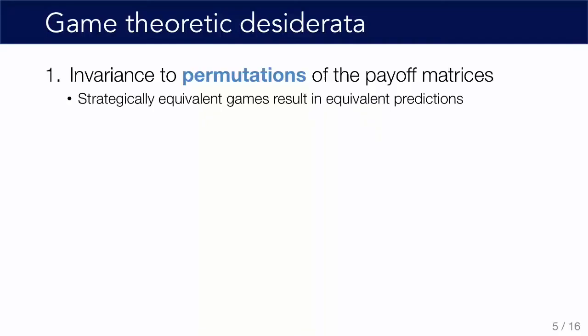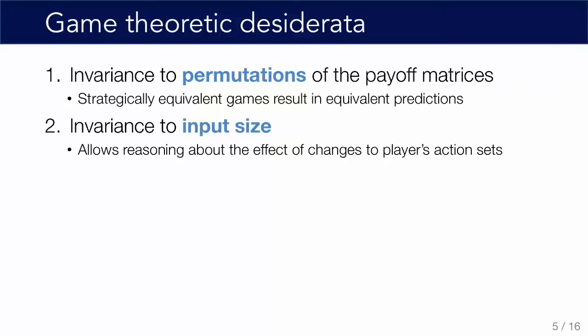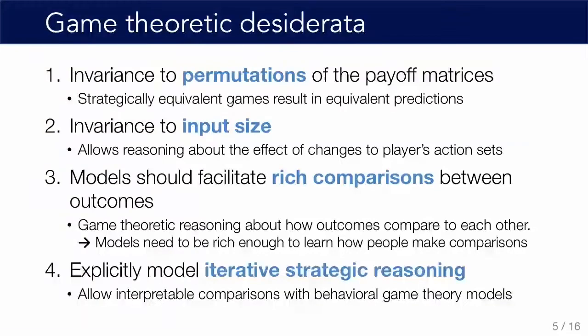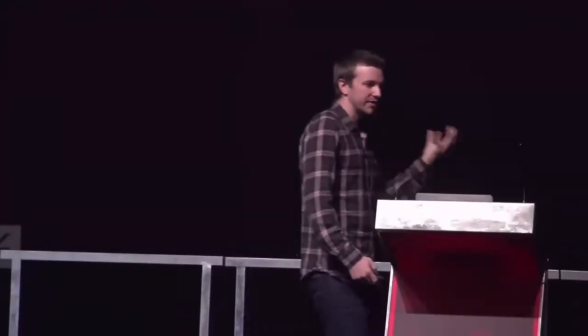Let's think more carefully about what game theory tells us would describe a good behavioral model. First, we'd want invariance to permutations of the payoff matrix, so strategically equivalent games lead to equivalent predictions up to a permutation of the output. Second, we'd want invariance to the size of the input matrix, so we can reason about counterfactual questions like what happens if we change the player's action sets. Third, our model should facilitate rich comparisons between outcomes, since game theory is fundamentally about reasoning over different outcomes. And finally, we'd want our model to explicitly represent iterative strategic reasoning, because we know that's the most successful previous behavioral game theory model.